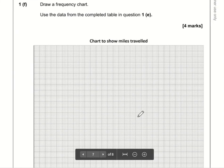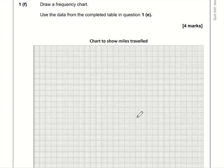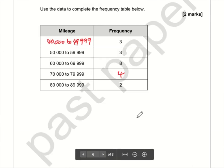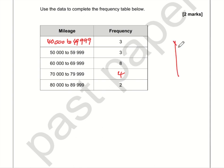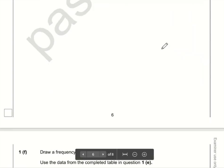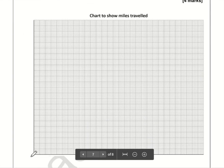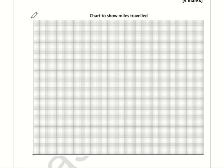Here we need to draw a frequency chart using the data from the completed table in part E. On the vertical axis I'll have frequency, going up to a maximum of 8. Along the bottom I'll have bands: 40 to 49, 50 to 59, and so on in thousands. Since the maximum frequency is 8, I'll scale the axis so every unit represents one frequency. I'll label it up to eight: two, three, four, five, six, seven, eight.